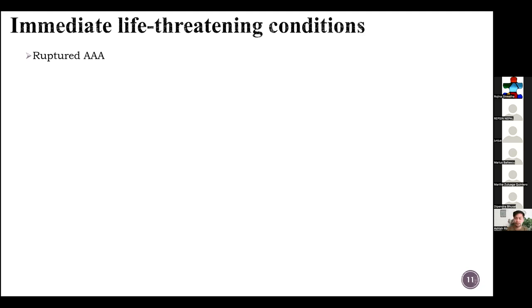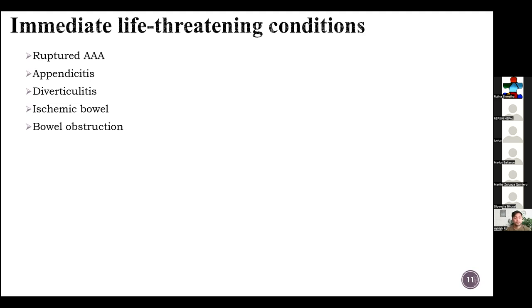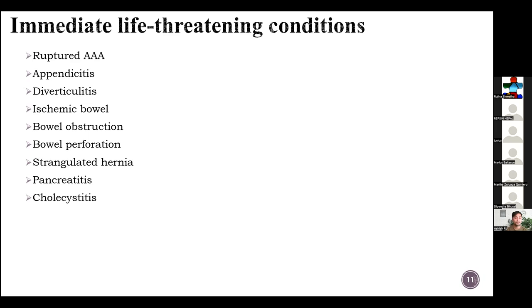When making the differential diagnosis, we always have to consider immediate life-threatening conditions and remember the red flag signs. Some life-threatening conditions to mention today are: ruptured AAA, appendicitis, diverticulitis, ischemic bowel, bowel obstruction, bowel perforation, strangulated hernia, pancreatitis, ectopic pregnancy, diabetic ketoacidosis, myocardial infarction, and abdominal trauma.